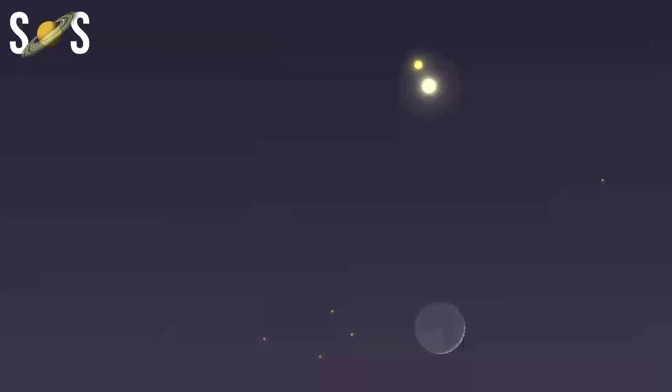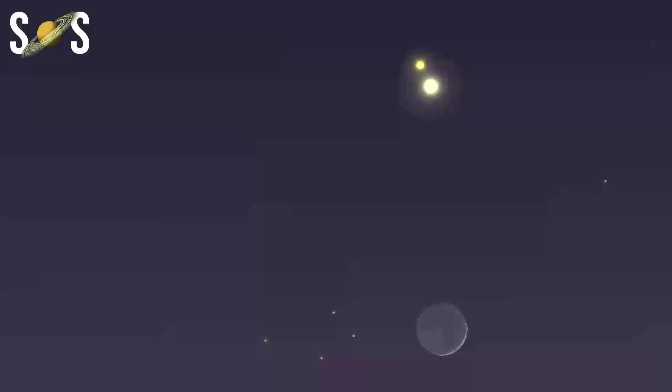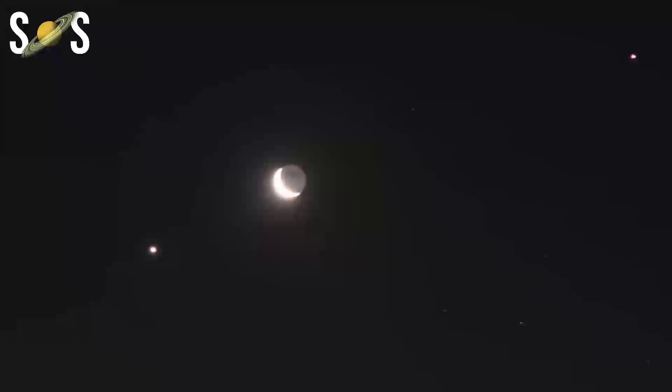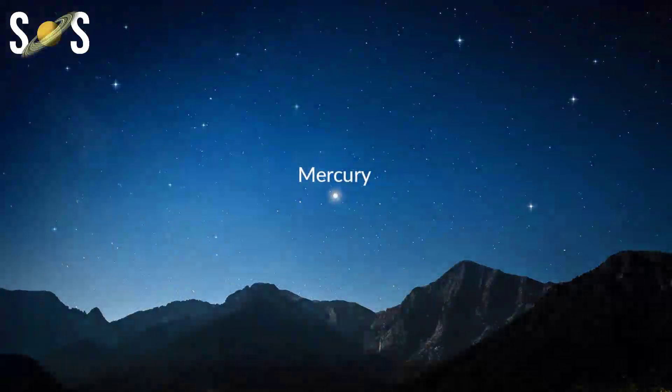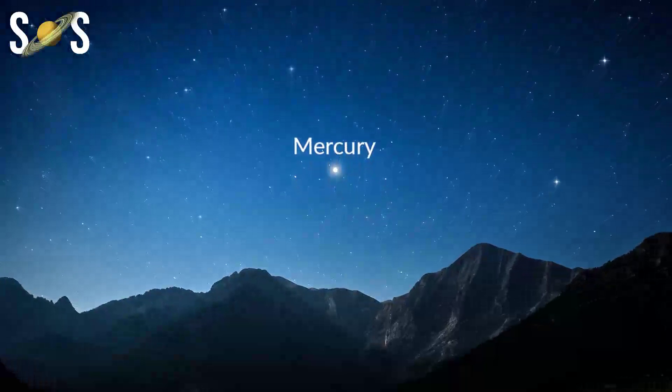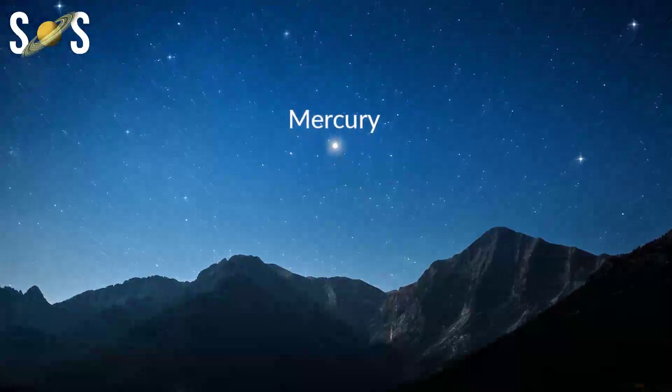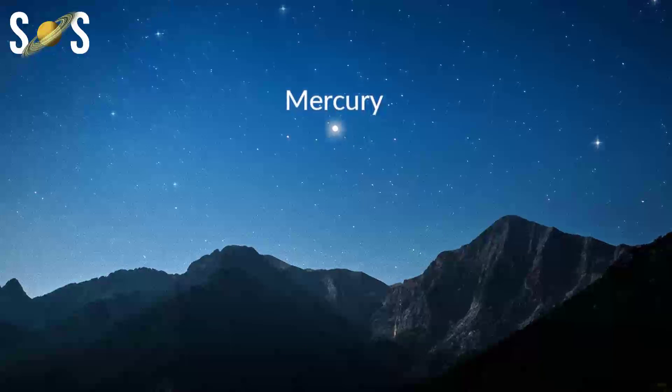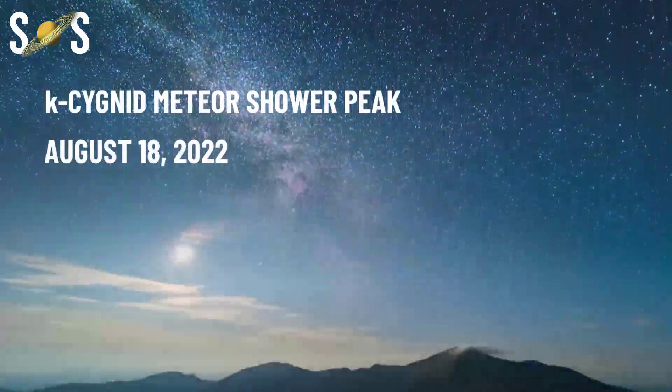August 15th: Mercury at its evening peak. After its morning peak in June near the grand alignment, Mercury has now swung around to the other side of its orbit and is rising to its highest in the evening sky. On August 15th, it will reach its evening peak, staying 9 degrees above the western horizon after the sun sets. While this isn't as high as other orbits based on our angle of viewing, it's still an opportunity to spot our tiny solar system neighbor.